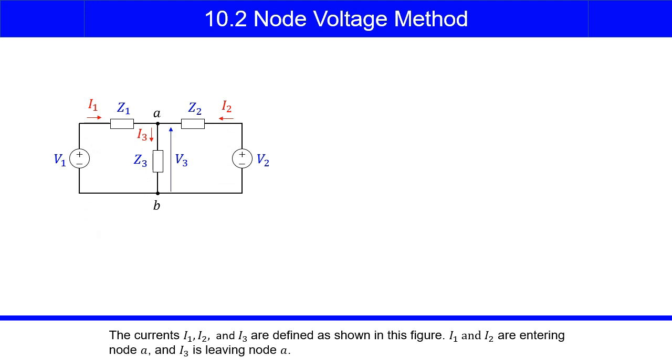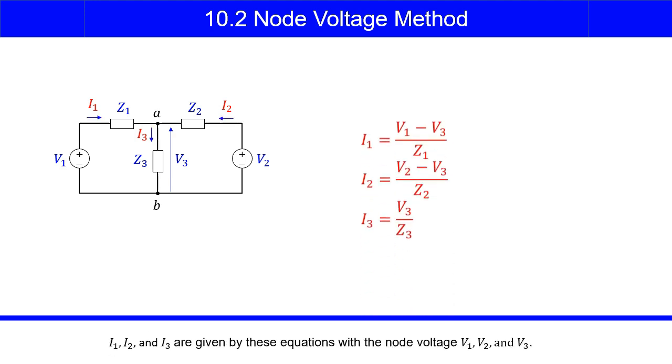The currents I1, I2, and I3 are defined as shown in this figure. I1 and I2 are entering node A, and I3 is leaving node A. I1, I2, and I3 are given by these equations with the node voltages V1, V2, and V3.